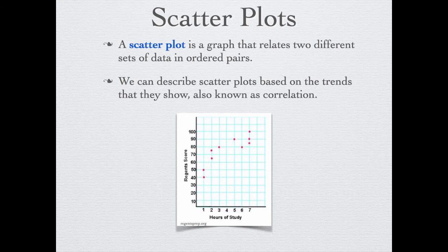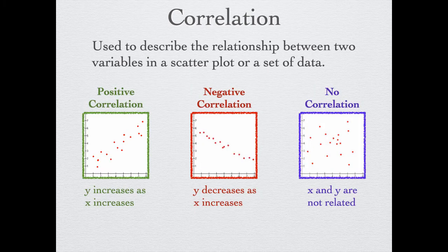A scatter plot is a graph that relates two different sets of data in ordered pairs. We can describe scatter plots based on the trends that they show, and these are called correlations. A correlation is used to describe the relationship between the two variables that are in a scatter plot or in a set of data.